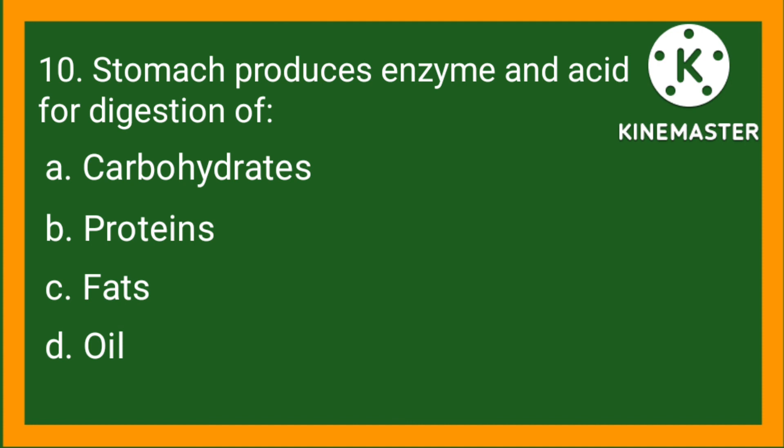Statement number 10. The stomach produces enzymes and acid for further digestion of: option A, carbohydrates; option B, proteins; option C, fats; option D, oil. So the right option is B, protein.